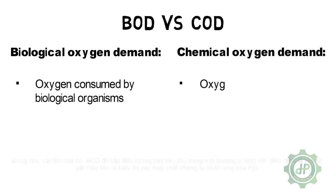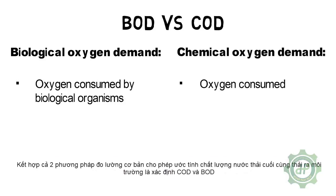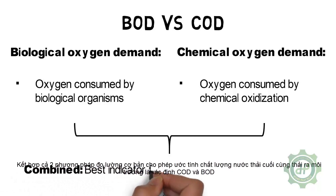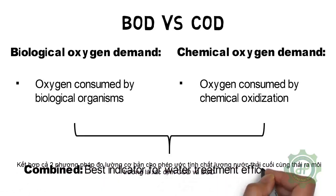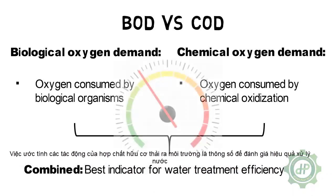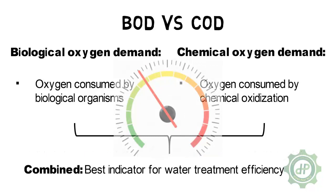BOD accounts for compounds that are not chemically degraded. Combined, COD and BOD represent basic measures that allow estimation of the final quality of the effluent to be discharged in the environment. By determining both COD and BOD, the impact of organic compounds discharged into the environment can be estimated, serving as a parameter for assessing water treatment efficiency.